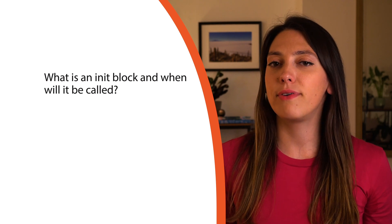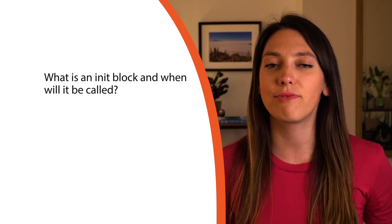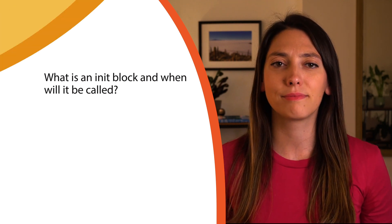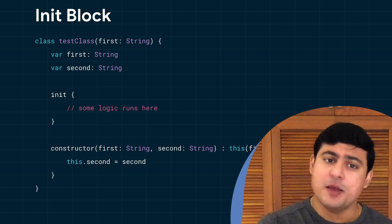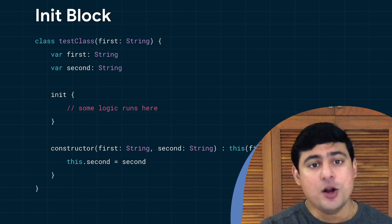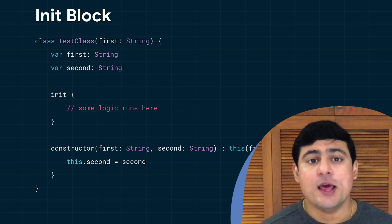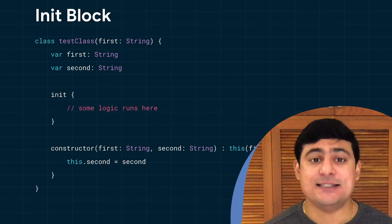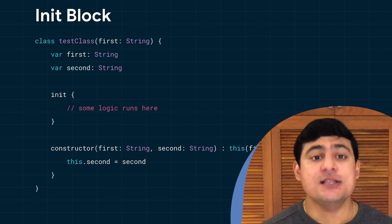There's one special function in Kotlin — init. What is an init block? Init block runs right after the primary constructor, where you can write some logic that needs to be run for all instances during creation, like setting up the logging infrastructure for your objects. Secondary constructor calls the primary constructor first, so the order of execution is: primary constructor first, then init block, and then the secondary constructor, in case the object is initialized using the secondary constructor.